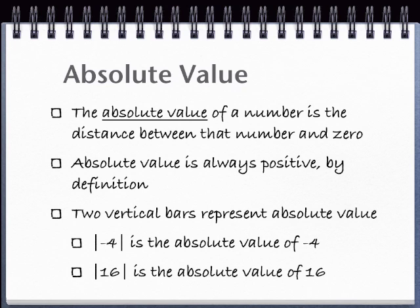Absolute value is the distance between any number and zero. Integers can be positive or negative, but absolute values are always positive. That's because absolute value is about the distance from zero, not the direction from zero. You indicate the absolute value of a number by putting the number between two vertical bars, like this.